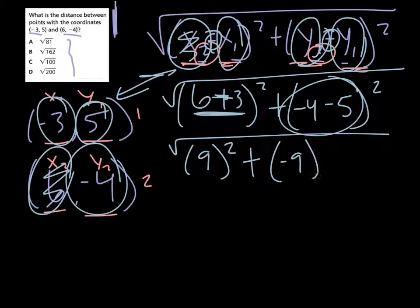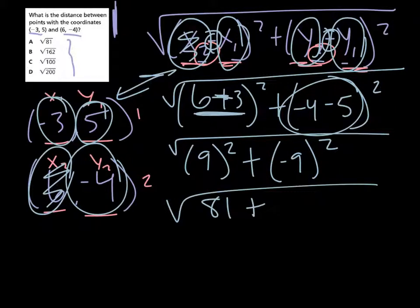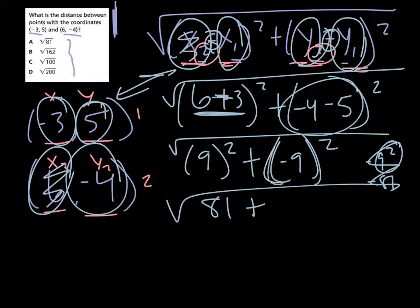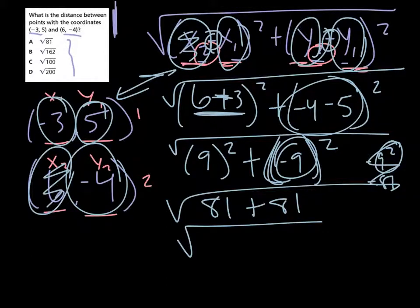That is 81 plus... and then whenever you put in calculator, don't just put -9² because then it'll tell you it's -81, which is wrong. Parentheses mean you're doing -9 times -9, which makes it a positive 81. And then we add those two together and we get 162.